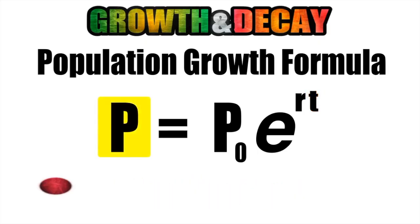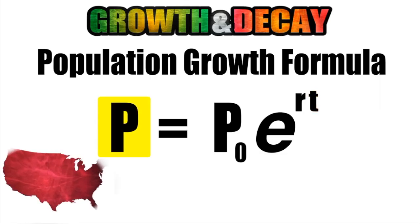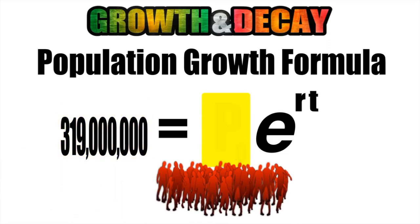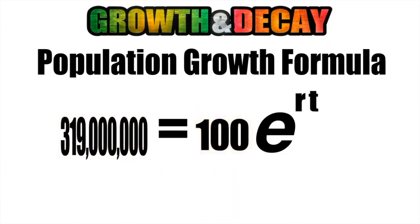So if every single person in the United States became a zombie, our final population would be approximately 319 million zombies. And we want to see how long it would take that initial population of the first 100 zombies to convert the rest of the country.